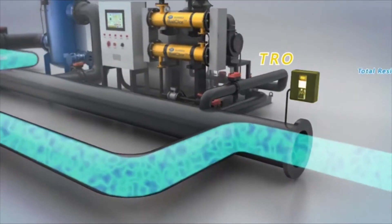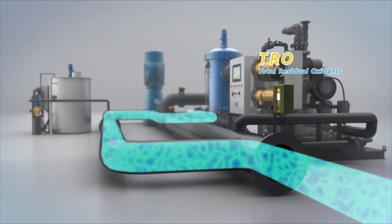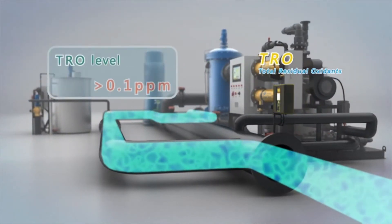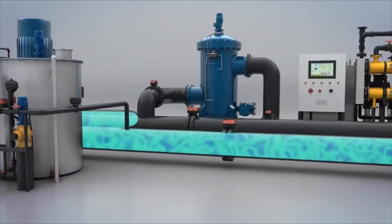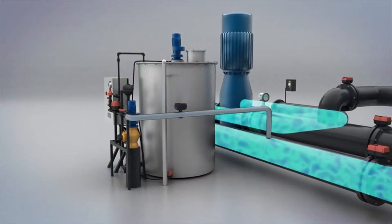TRO, total residual oxidant sensor installed at the outlet of de-ballasting pipe will closely measure the concentration level of active oxidant. If TRO level is higher than 0.1 ppm, neutralization unit will be operated automatically. The neutralizer will be injected into the de-ballasting pipe.